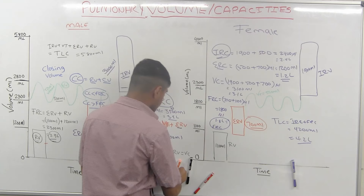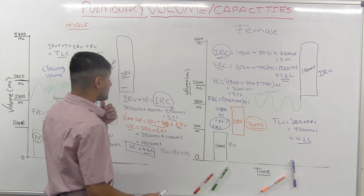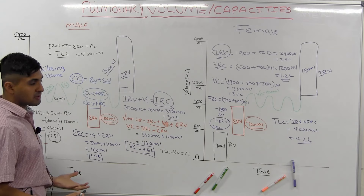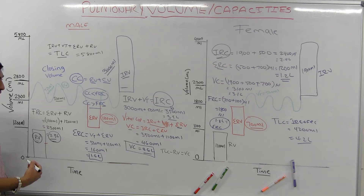Since spirometers cannot measure residual volume, a method called helium dilution is used. A container with a known volume V1 and a known helium concentration — say 15% — is connected to the patient's mouth.